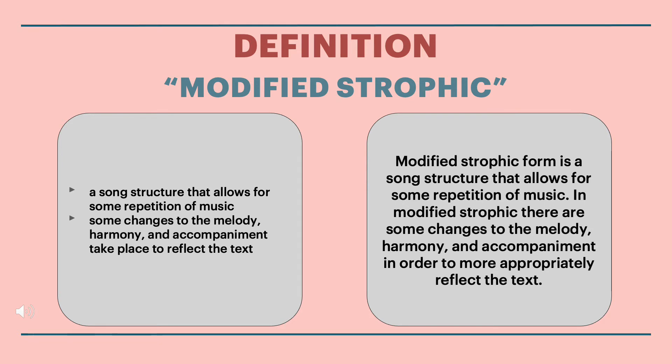Then we have modified strophic. Modified strophic form is a song structure that allows for some repetition of music. In modified strophic there are some changes to the melody, harmony, and accompaniment in order to more appropriately reflect the text. There's no real strict rule about what constitutes 'some changes,' but each verse ought to be substantially the same as the others to be part of this strophic family.